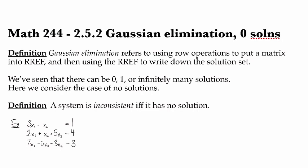First step is to write down the augmented matrix, which would be 3, -1, 0, 1, 2, 1, 5, 4, 7, -5, -8, 3.